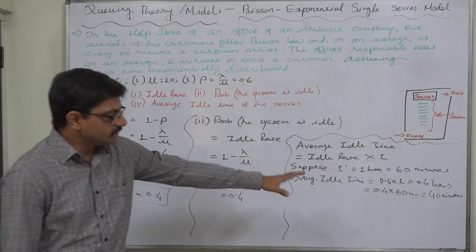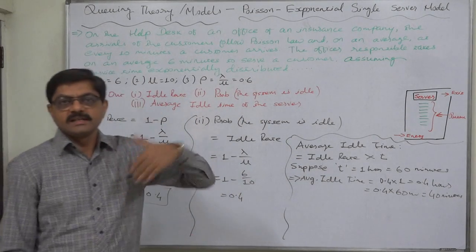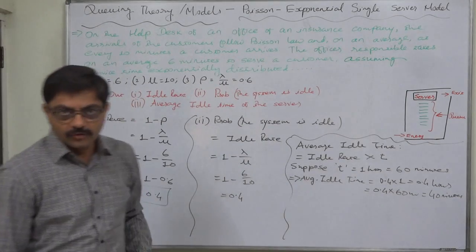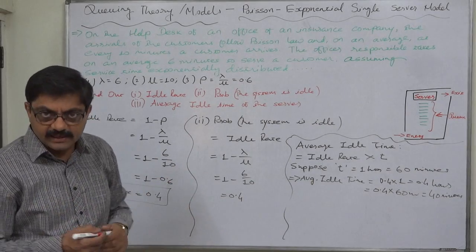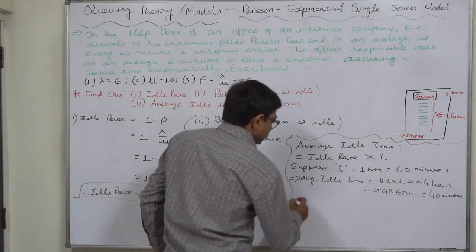But practically, in each and every hour, this is also not possible. So, let us take a higher or greater unit of time. Say, 10 hour working day. The average working hours in a day can be assumed 10 hours.